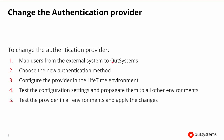So how would we change the authentication provider? To do this, we would first need to map the users from the external system into OutSystems, so an OutSystems user exists for them. Then we'd need to choose the new authentication method. We could then configure that authentication provider in the lifetime environment, and then begin testing the configuration settings. If the configuration settings work, then we'd want to propagate those settings to all of the other environments. Once they're in all of the other environments, we should test in each of the different environments, and then finally apply the changes.